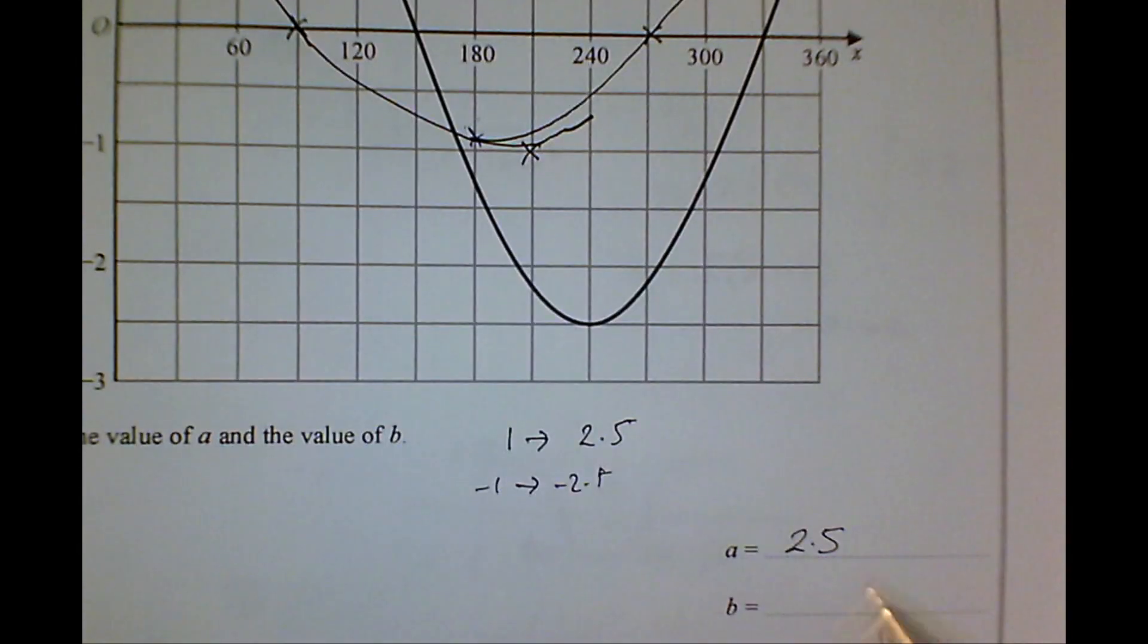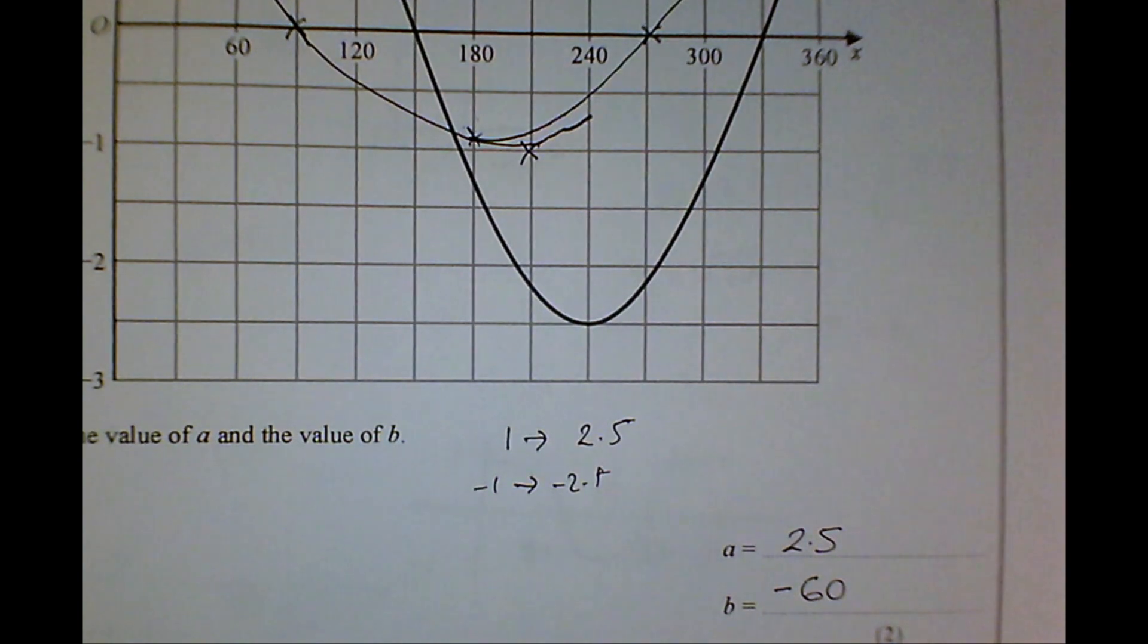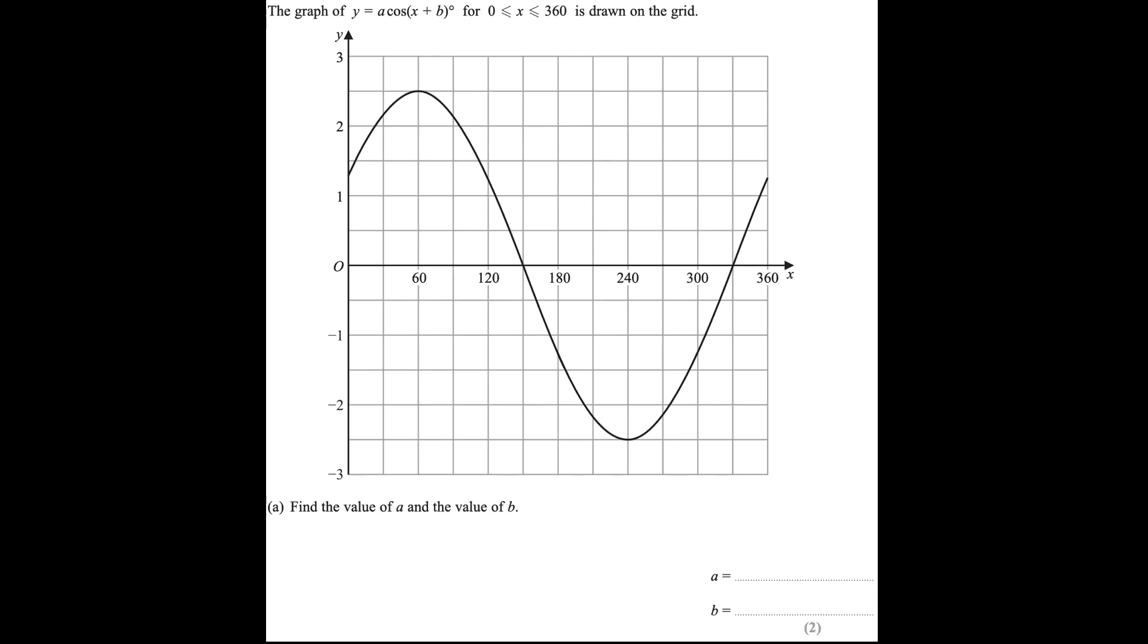Now, we would think that it would be plus 60, isn't it? But no, it's gone to the right, so it's going to be minus 60. And that's the two numbers that we needed. 2.5 and minus 60.